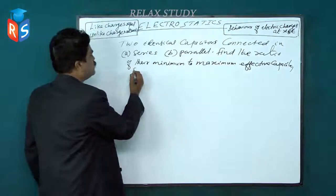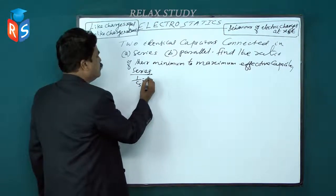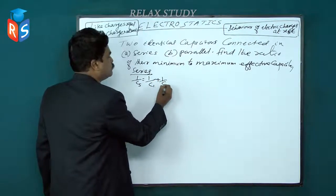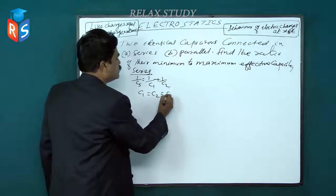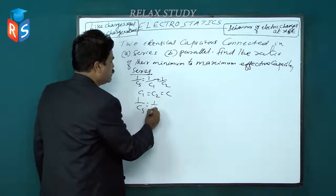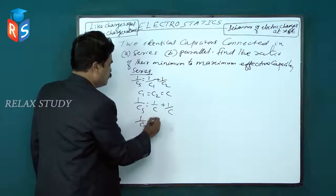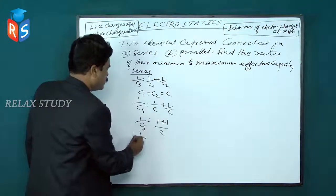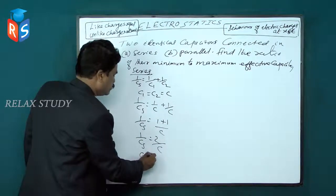In series, 1/Cs = 1/C1 + 1/C2. Here C1 = C2 = C, since they are identical. So 1/Cs = 1/C + 1/C = 2/C, therefore Cs = C/2.